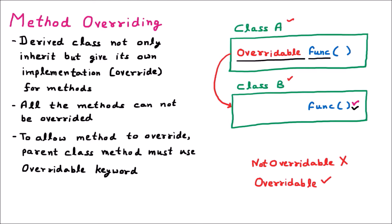There is one more keyword which is 'overrides'. When the child class method wants to overwrite the parent class method, we use the keyword 'overrides'. For example, if the child method 'func' wants to overwrite the parent's 'func' method, then it will use the 'overrides' keyword, which is applied before the func method.